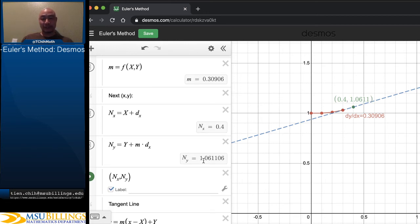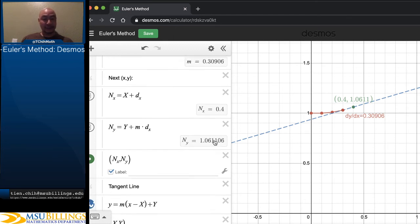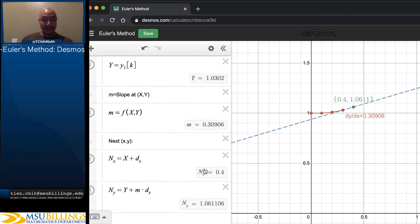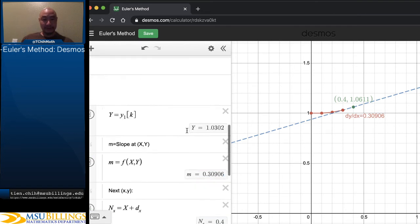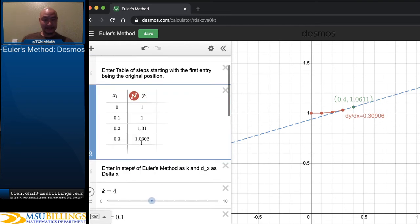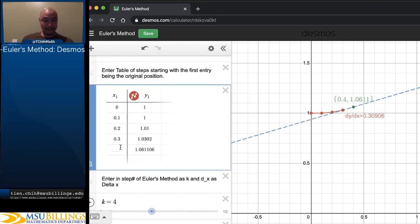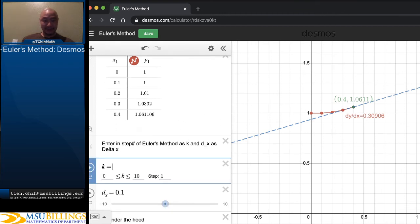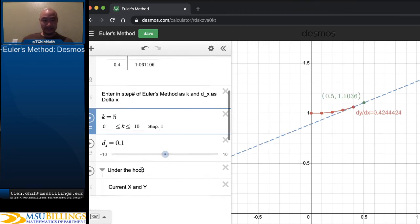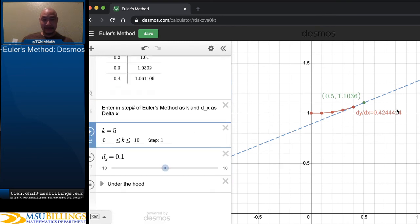So once we start moving out in decimal places, we're going to want to come under the hood and see what the next y is. So the next y is not 1.0611. It's going to be 1.061106. And if we move on to our next step, we'd be there.